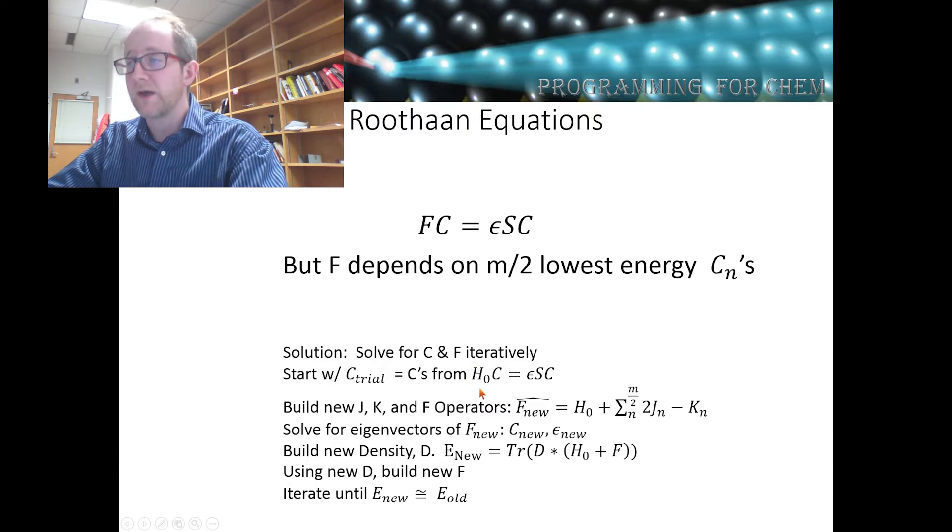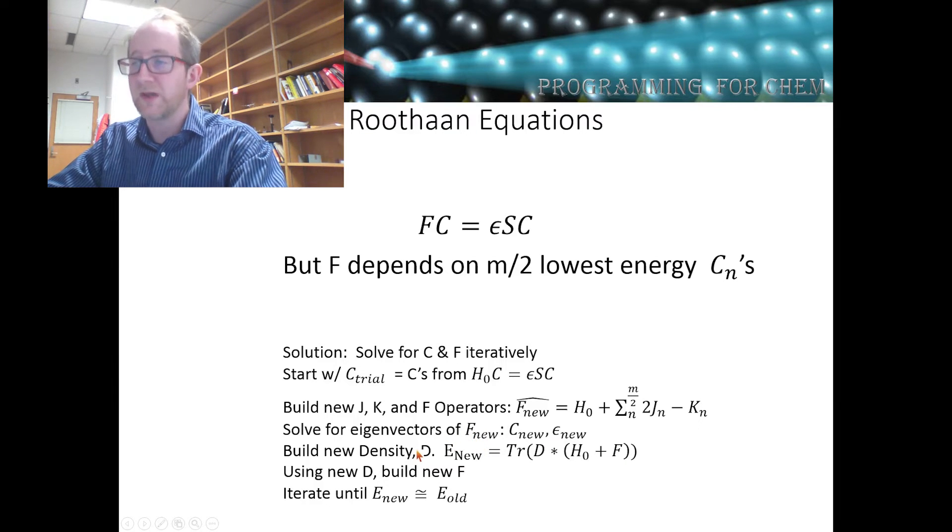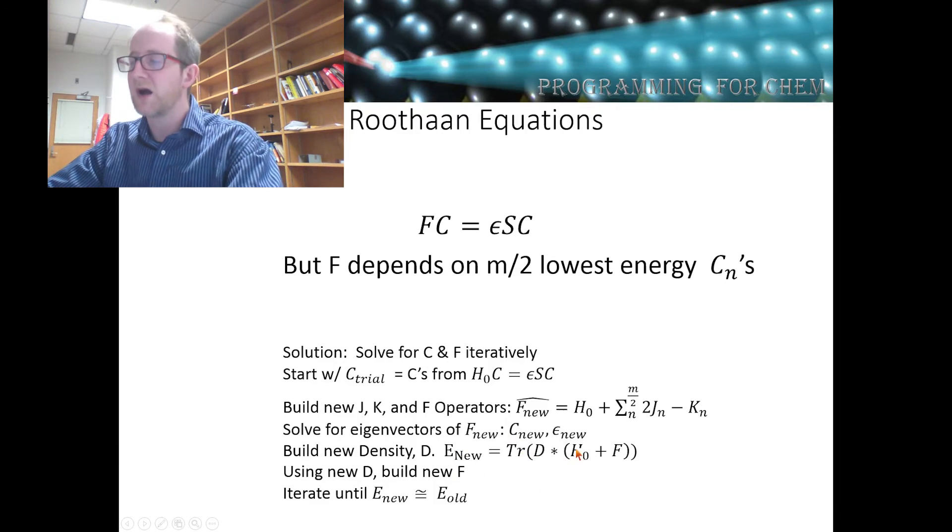Once we do that, with those eigenvectors, we're going to build a new Fock operator by building our Coulomb and exchange operators. Then once we do that, we're going to solve for our new eigenvectors of the Fock operator. And using those, we'll build a density. And we'll calculate the energy is equal to the trace of the density operator times the core Hamiltonian plus the Fock matrix.